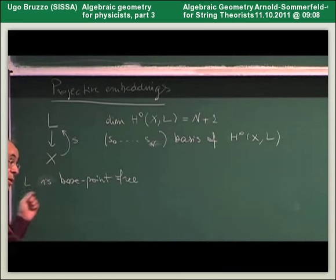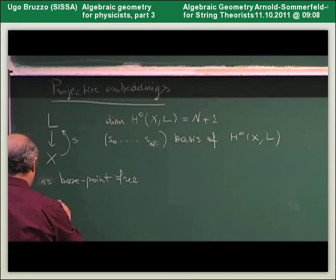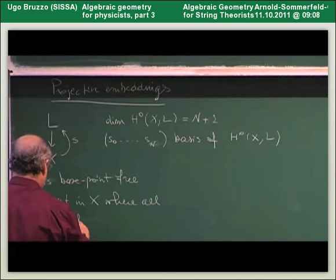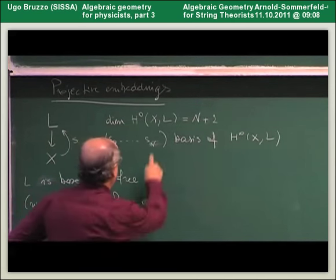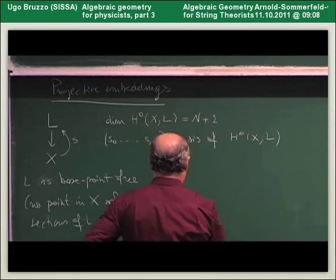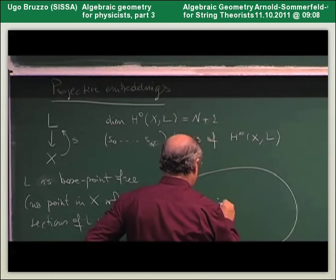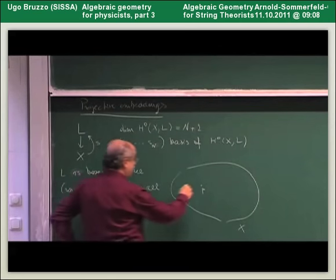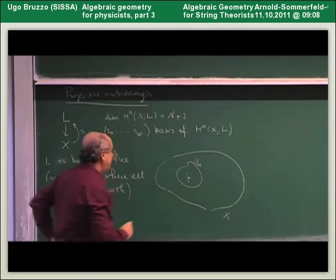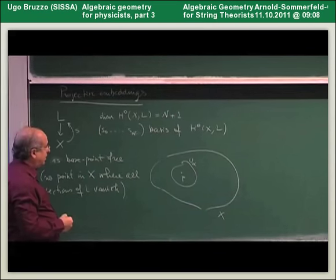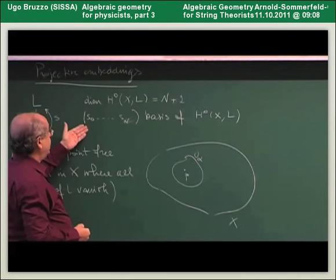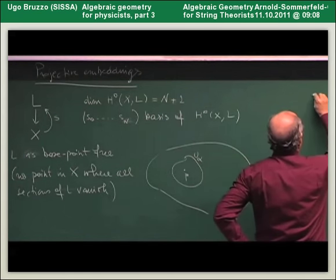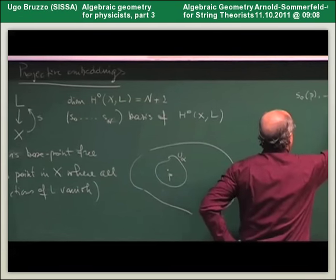which means there is no point in X where all sections of L vanish. We have fixed this basis. Now let's fix a point in the complex manifold, and we know that the line bundle L is locally trivial. So there will be a neighborhood U alpha of P over which L is trivial. Using this trivialization, each section will become just a function. So we can take this bunch of functions and evaluate them at this point P.